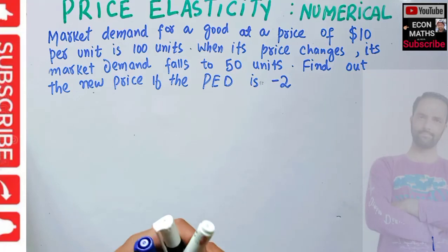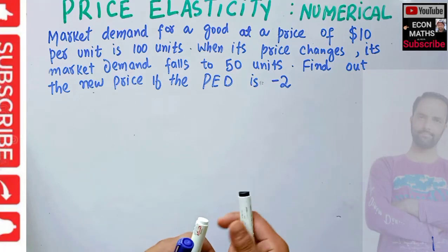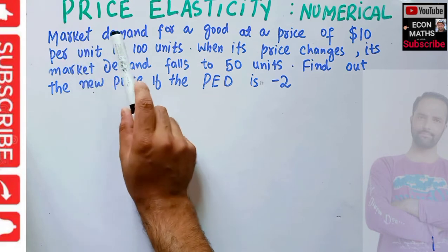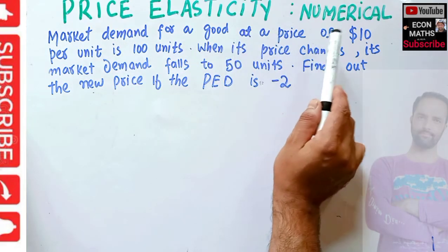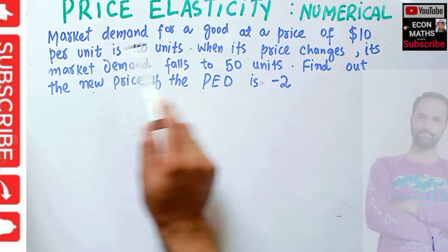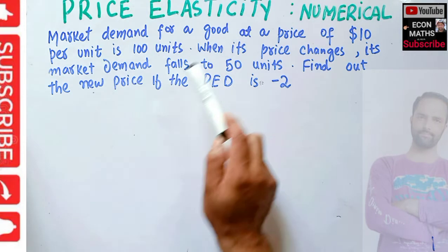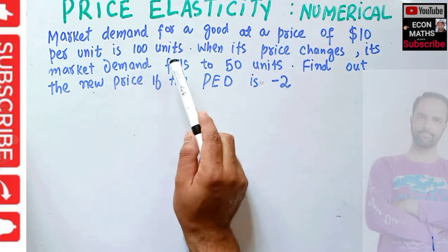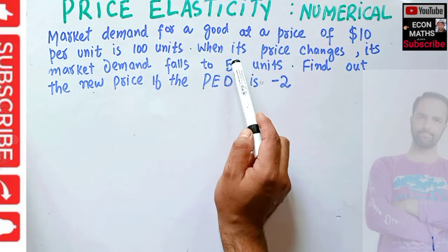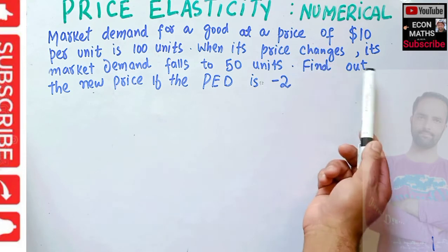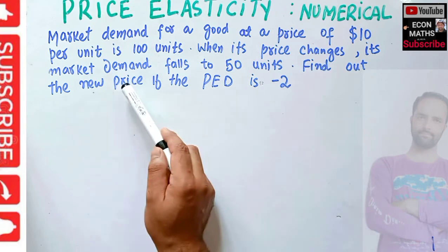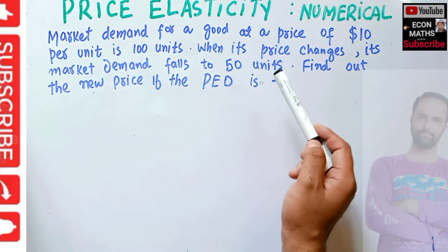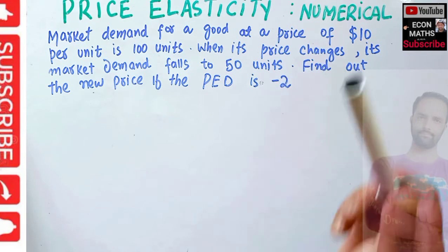In this video we will solve a numerical problem on price elasticity of demand. The question is: market demand for a good at a price of $10 per unit is 100 units. When its price changes, its market demand falls to 50 units. Find out the new price if the price elasticity of demand for this good is minus 2.